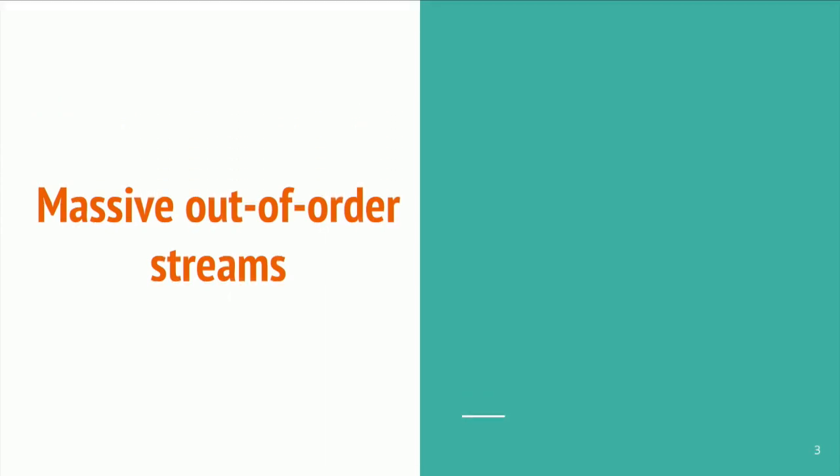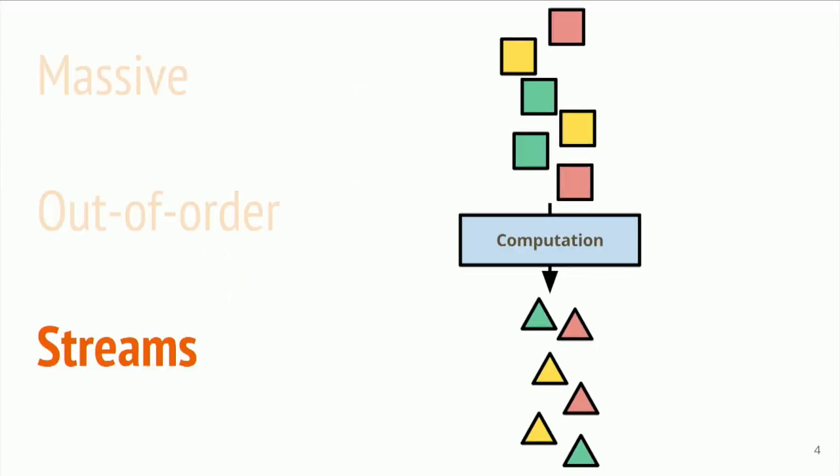And then I'm going to talk about how Apache Beam generally helps you address your data processing needs in that area before I go on to really digging into the new feature of stateful processing. So if you're in this room, you probably have a stream of data you're interested in or would like to start producing such a thing. And here is how I'm going to draw streams. You've got little squares of inputs coming down from above and you're turning them into triangles. I'm going to use colors for keys because there's going to be a lot of grouping things by keys. So we've got red, green, and yellow here.